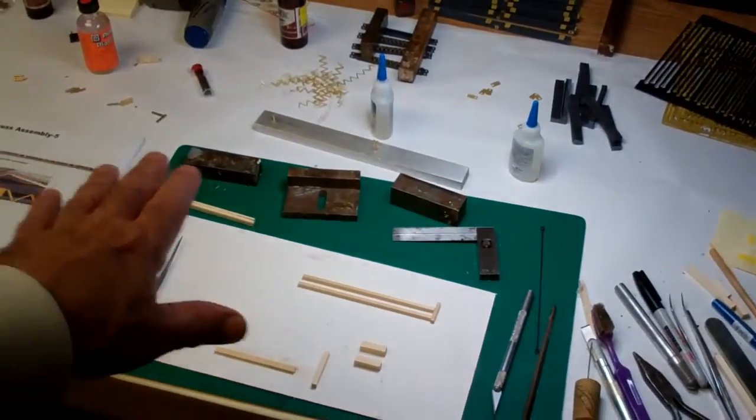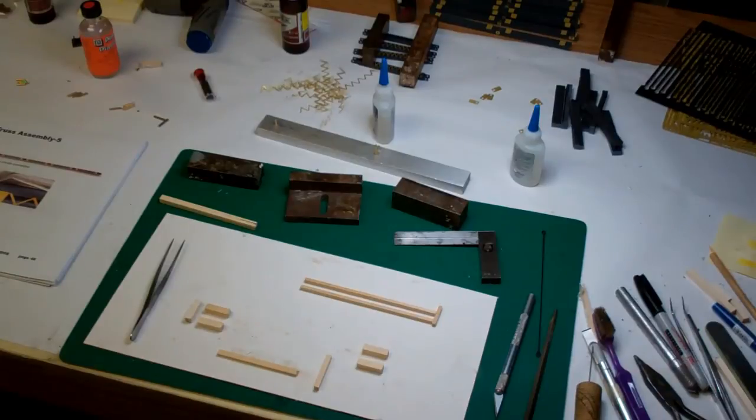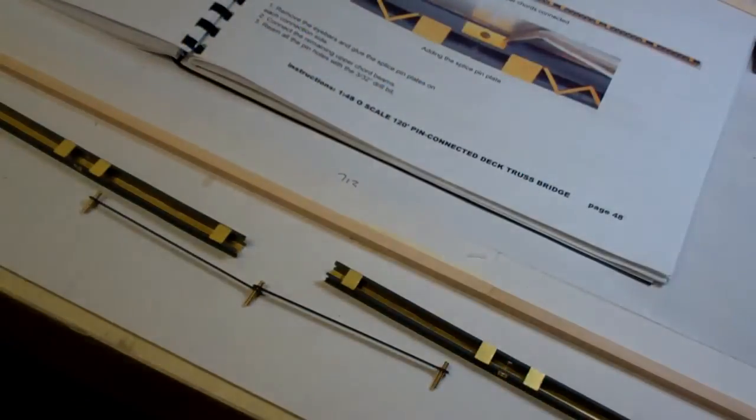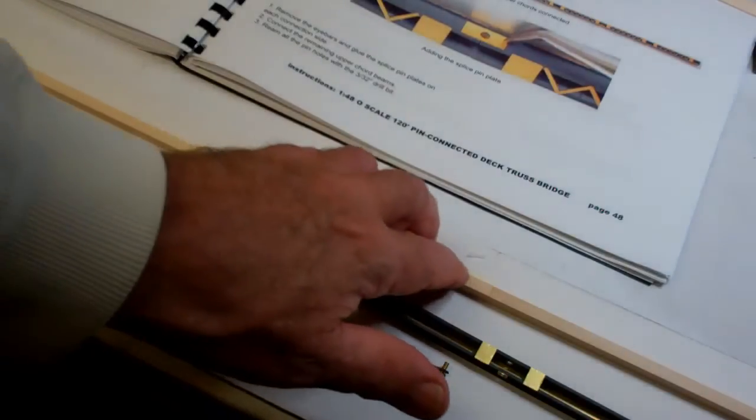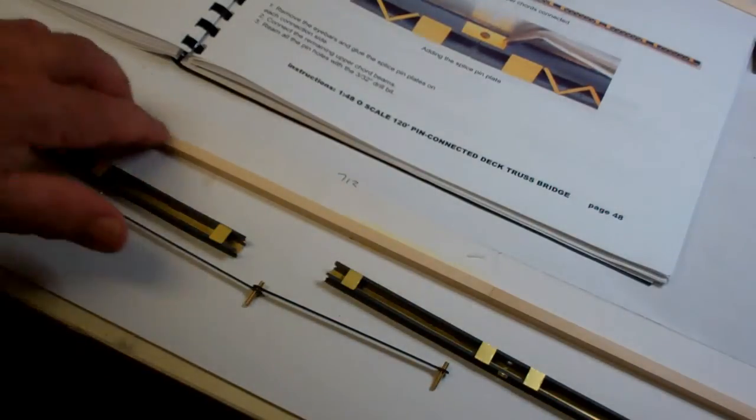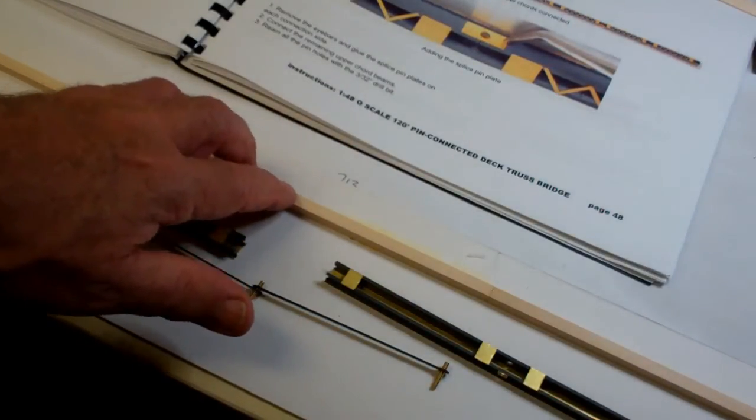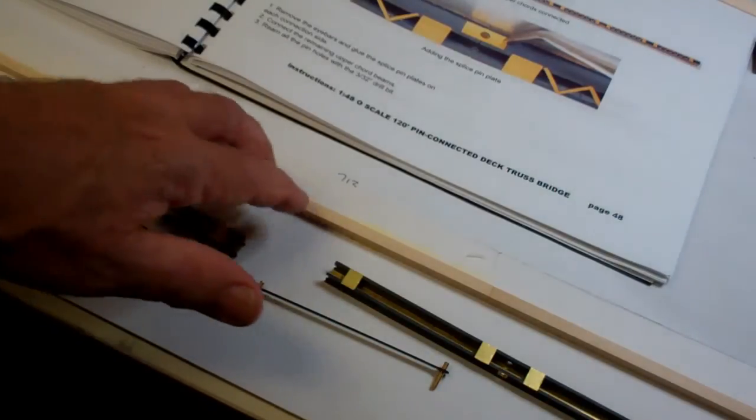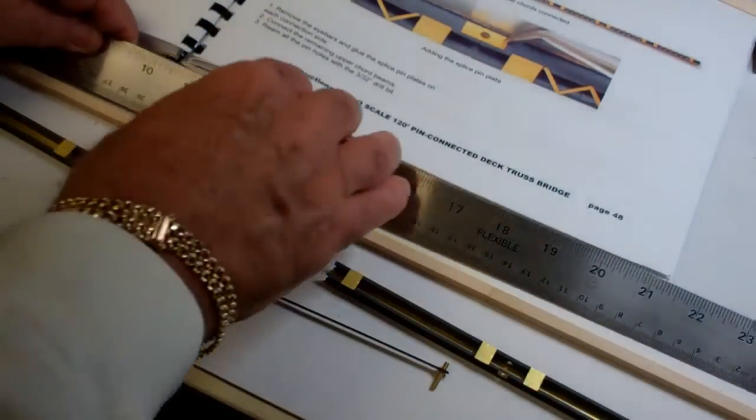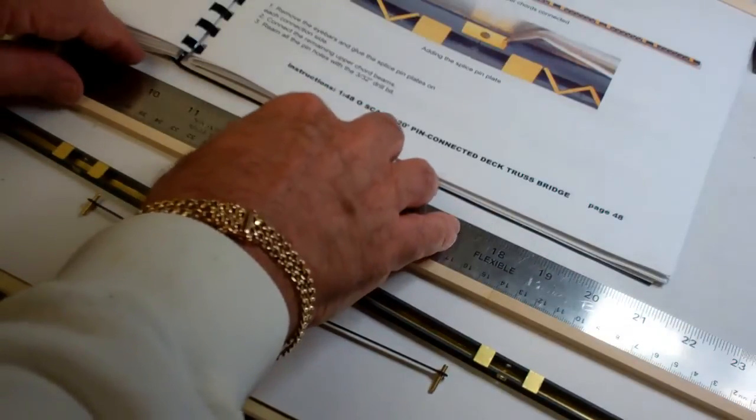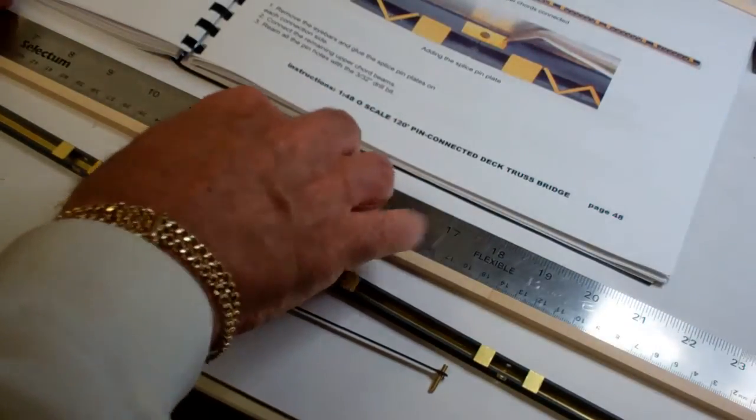Following the instructions, I've glued a strip of 12 by 12 timber from Mount Albert Scale Lumber Company because it's very true and straight. I took an 18 inch steel rule and glued this piece of strip wood to it.